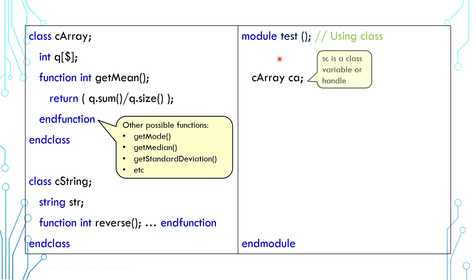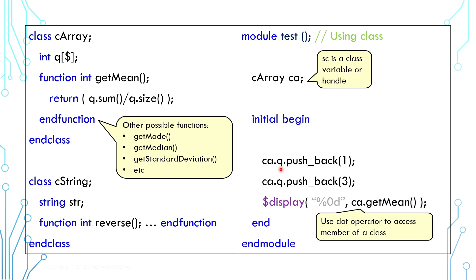Now, we can create a variable using these new types. For example, CA is a variable or handle based on CArray. We can use dot operator to access the class members like the array queue and the function getMe. The only catch is we must instantiate a class variable by calling new before we use it. If not, we'll get a null pointer error.